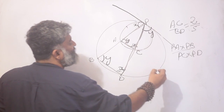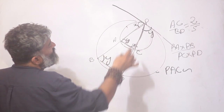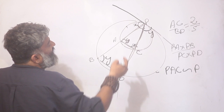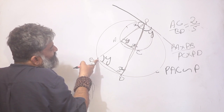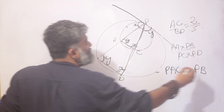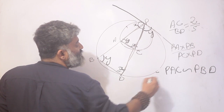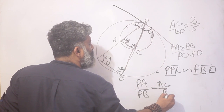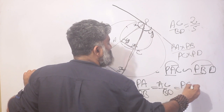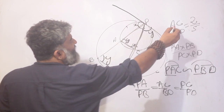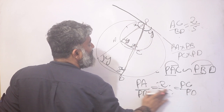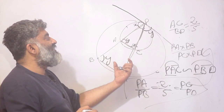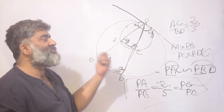Thinking of triangle PAC and triangle PBD for similarity: angle P is common to both, and angle A corresponds to angle B by the alternate segment theorem, and angle C corresponds to angle D. So PA upon PB equals AC upon BD equals PC upon PD. I already have AC as 2 and BD as 5. Another perhaps scary-looking diagram, but once you spot the tangent-chord interaction, what follows is a series of very easy steps.